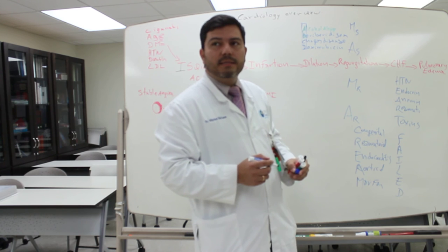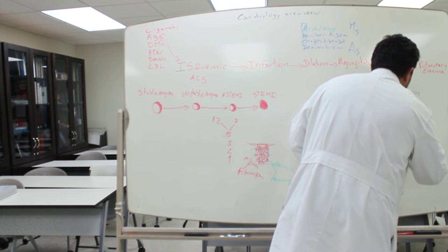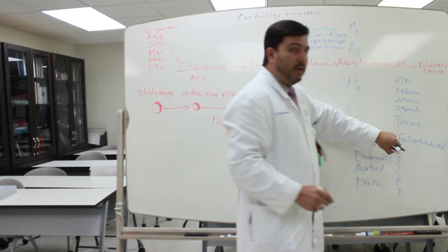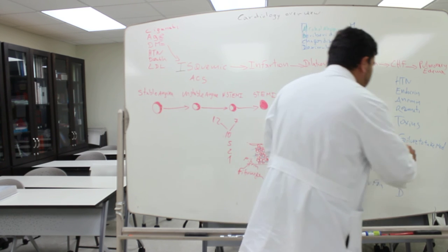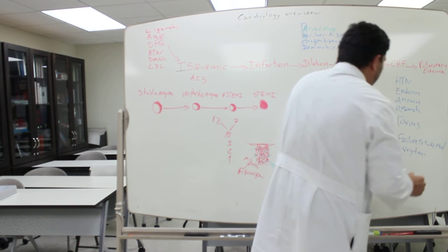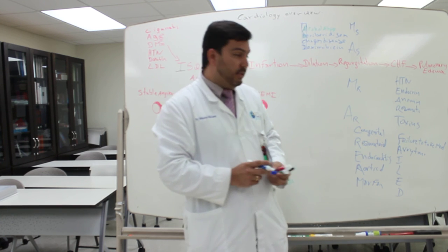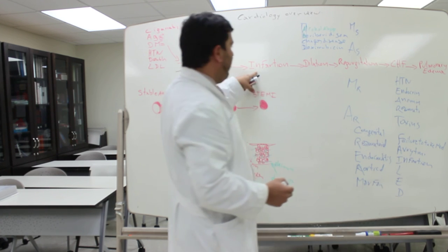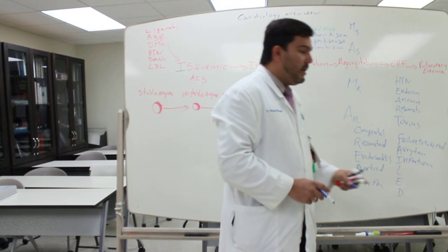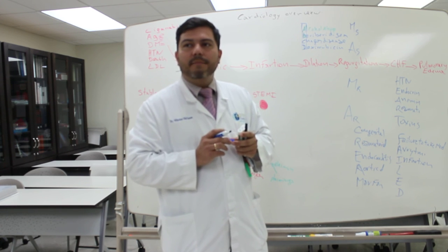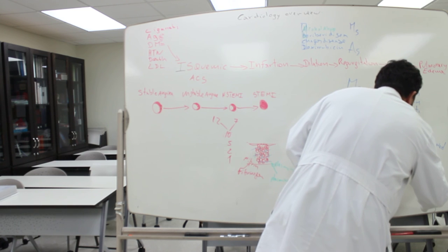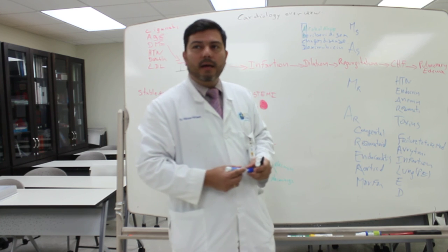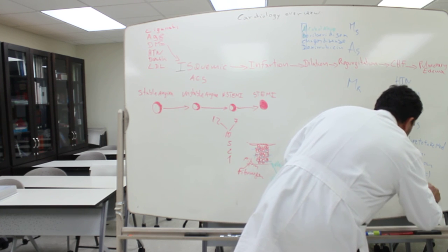F stands for failure to take medication. A stands for arrhythmias, which can also cause this condition. I stands for infarction — you see infarction here and one more time here. L stands for lung disease, like pulmonary embolus, which can cause congestive heart failure. E stands for electrolyte disturbance, and D stands for death.